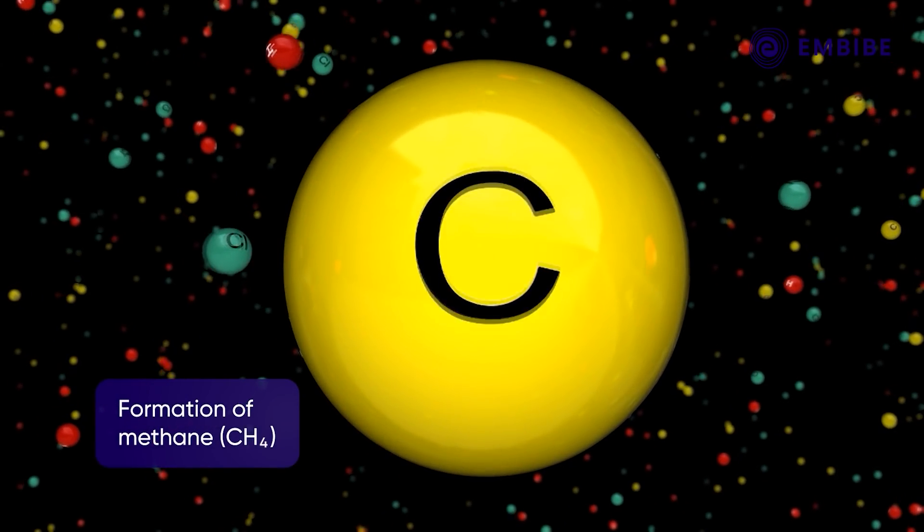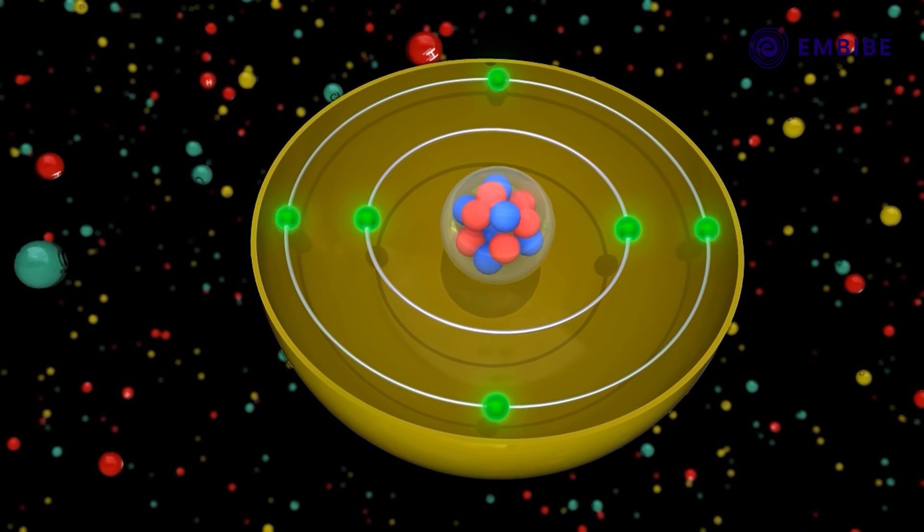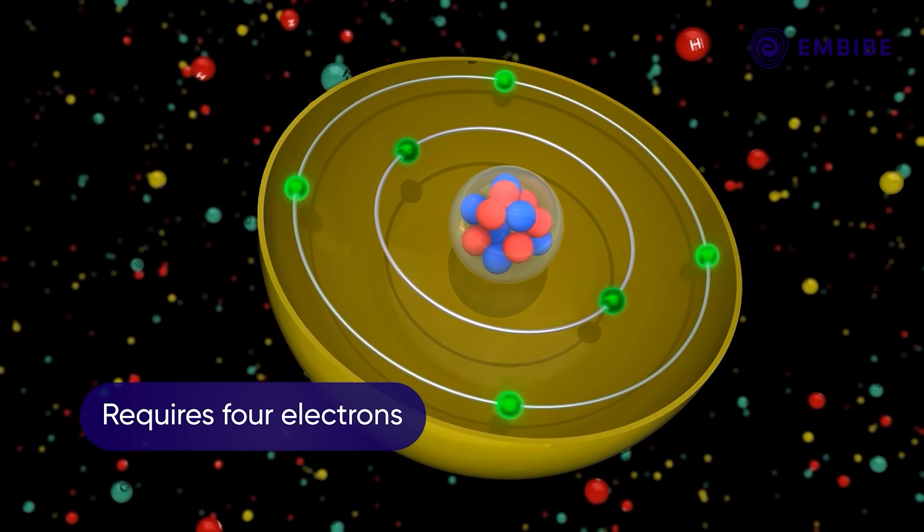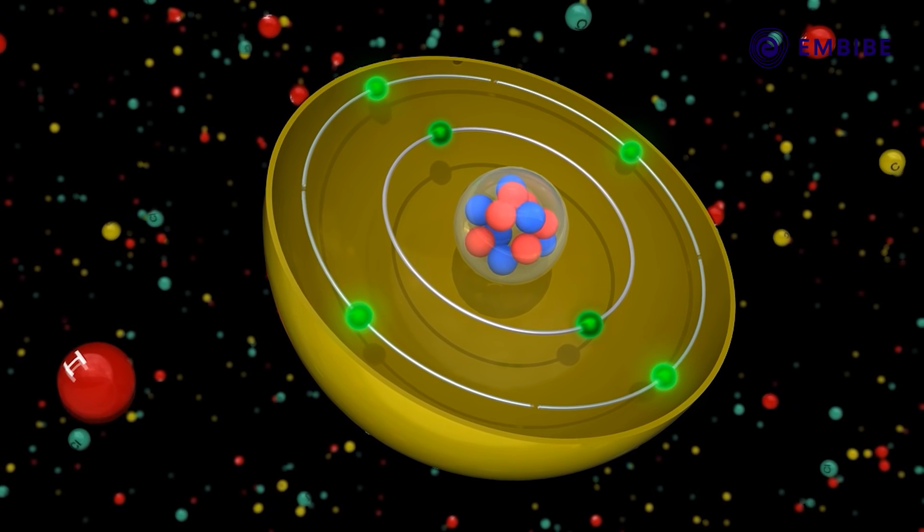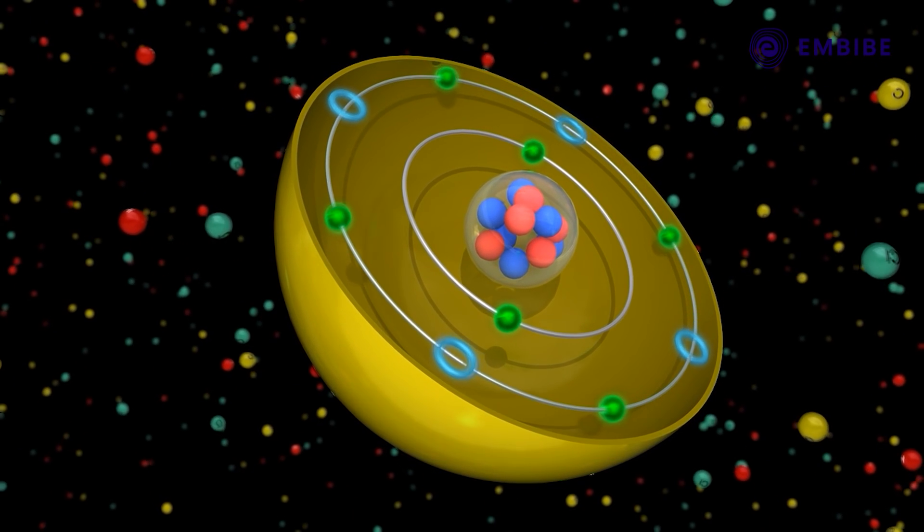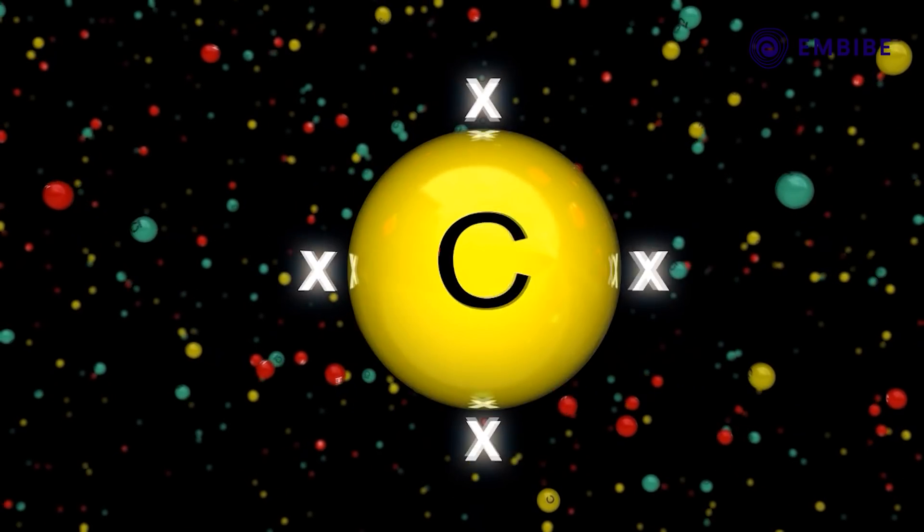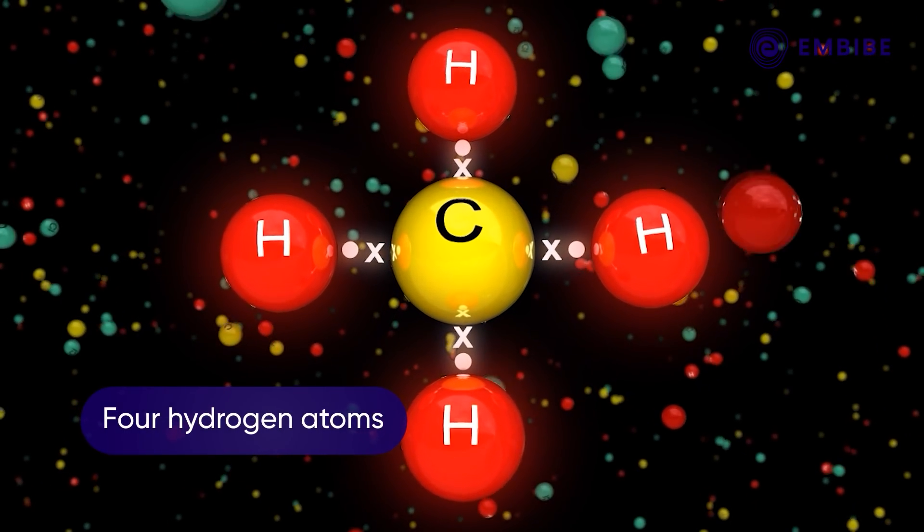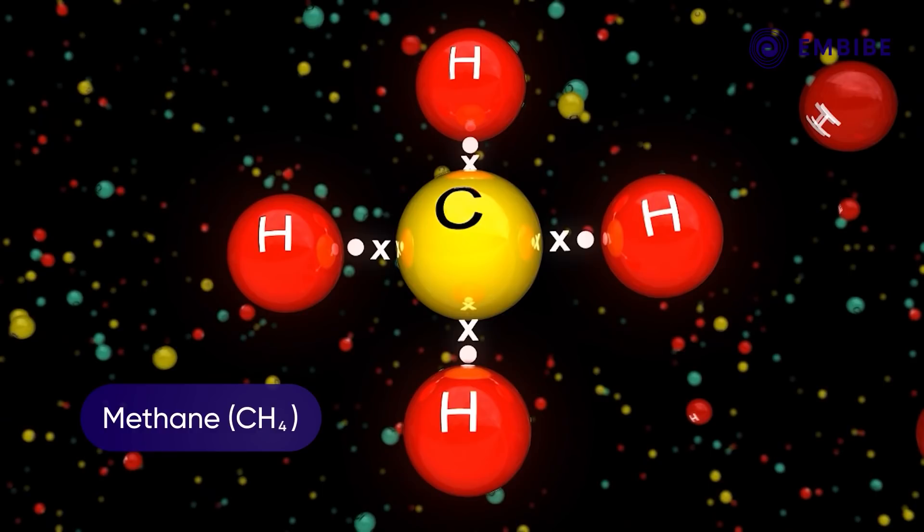The electronic configuration of a carbon atom shows that this atom requires four electrons to acquire a stable electronic configuration. This configuration is achieved by sharing its four electrons with four hydrogen atoms to form the molecule of methane, CH4.